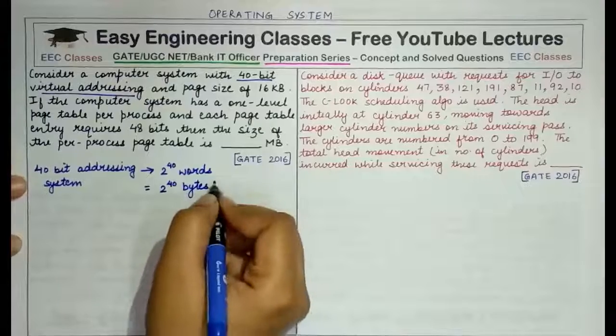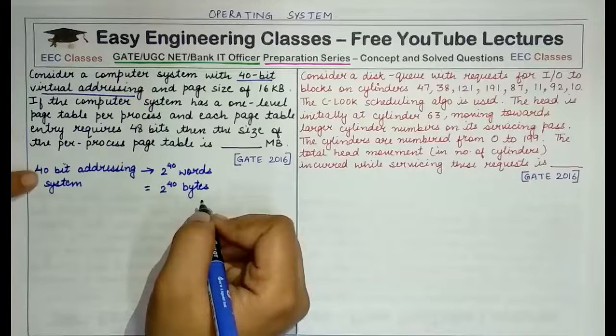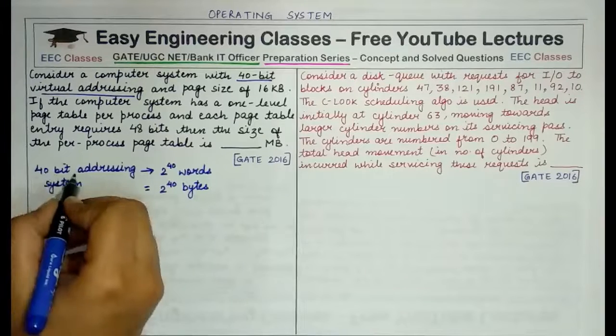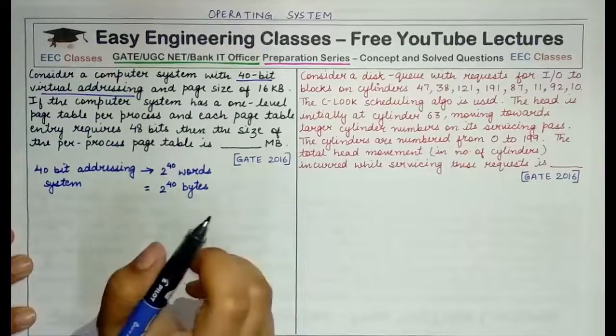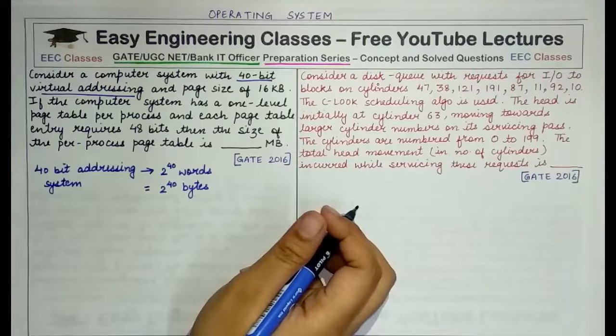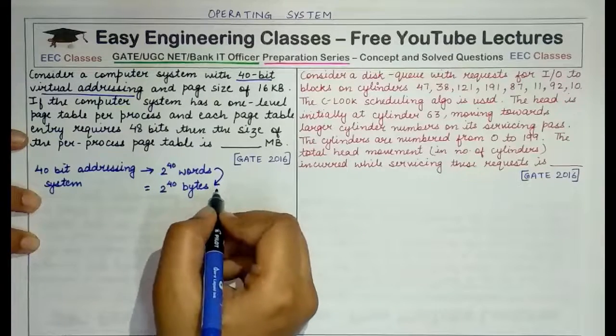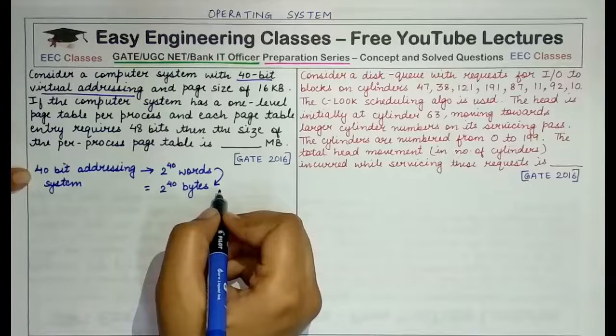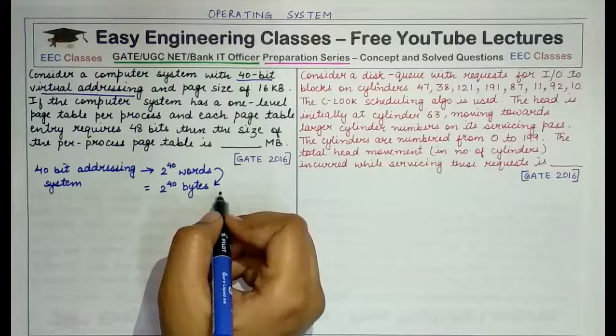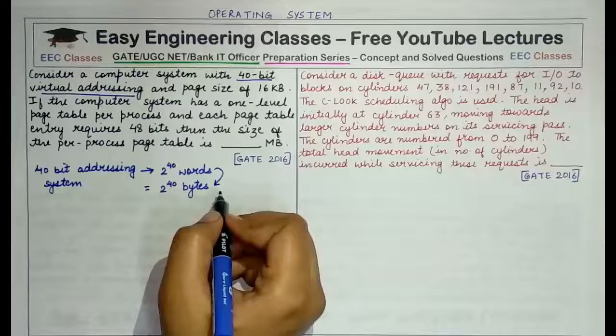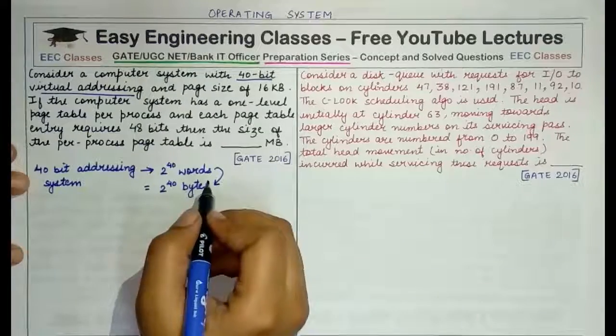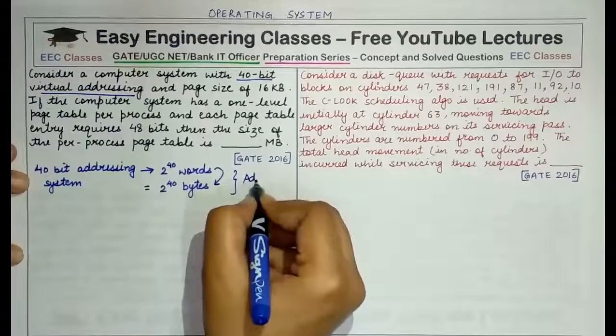Now one very big mistake that students generally do in such questions, especially when converting from 40-bit to total address space. You do not have to see that since it is given it is a 40-bit system, you write 2 raised to power 40 bits. No. For any address space, the basic unit or basic addressable unit is words and by default, the value of words is taken to be as bytes. So no matter how it is given to you, even if it is written that it is an n-bit system, you don't have to be confused between bits and bytes. The total size of address space is always in terms of words and here by default, a word is taken as byte, a single byte unless specified otherwise.